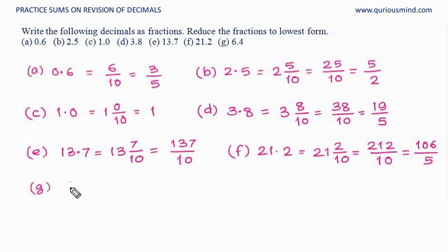G, 6.4. 6 is the whole, 4 in 10th place, so 4 tenths. Converting it into improper fraction, 10 into 6 is 60, 60 plus 4 is 64. 64 upon 10. Both even numbers, so 2 is a common factor. We will divide numerator and denominator by 2 and get 32 upon 5. That's the lowest form.